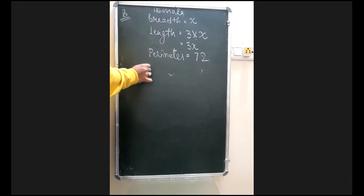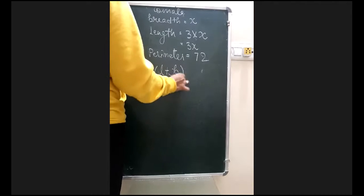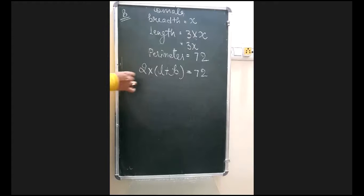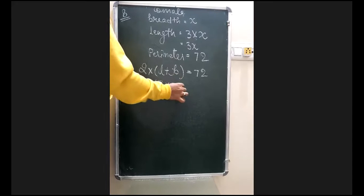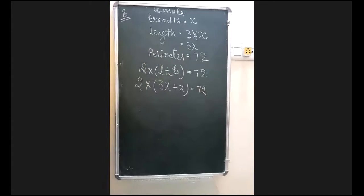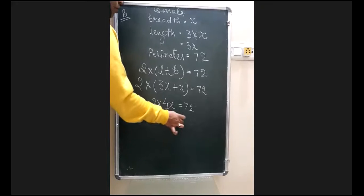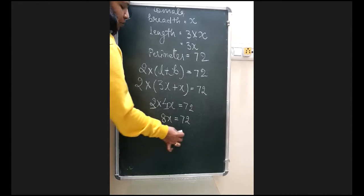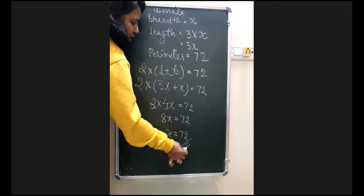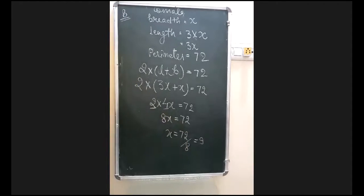Perimeter of rectangle = 2 × (length + breadth) = 72. So 2 × (3x + x) = 72, giving 2 × 4x = 72, so 8x = 72, and x = 9. The breadth is 9 meters.